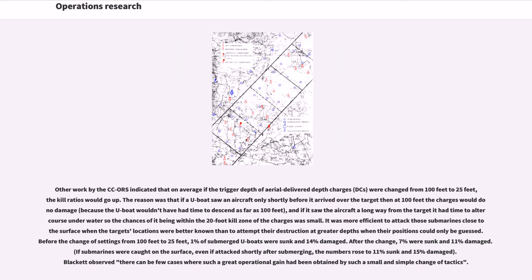Other work by the CCORS indicated that on average if the trigger depth of aerial delivered depth charges were changed from 100 feet to 25 feet, the kill ratios would go up. The reason was that if a U-boat saw an aircraft only shortly before it arrived over the target, then at 100 feet the charges would do no damage, and if it saw the aircraft a long way from the target, it had time to alter course underwater so the chances of it being within the 20-foot kill zone of the charges was small. It was more efficient to attack those submarines close to the surface when the target's locations were better known. Before the change of settings from 100 feet to 25 feet, 1% of submerged U-boats were sunk and 14% damaged. After the change, 7% were sunk and 11% damaged. Blackett observed there can be few cases where such a great operational gain had been obtained by such a small and simple change of tactics.